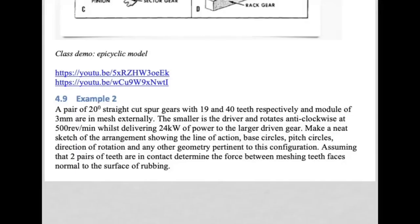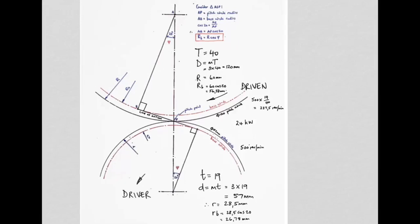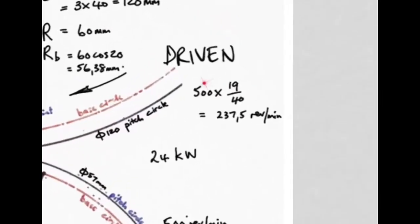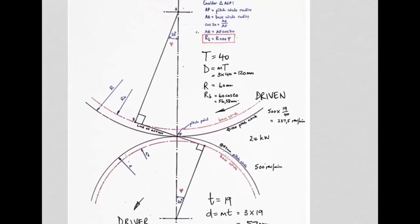The smaller gear rotates anti-clockwise at 500 RPM. The larger gear speed is 500 × (19/40) = 237.5 RPM — putting the smaller number on top makes the result smaller, as the driven gear turns more slowly.